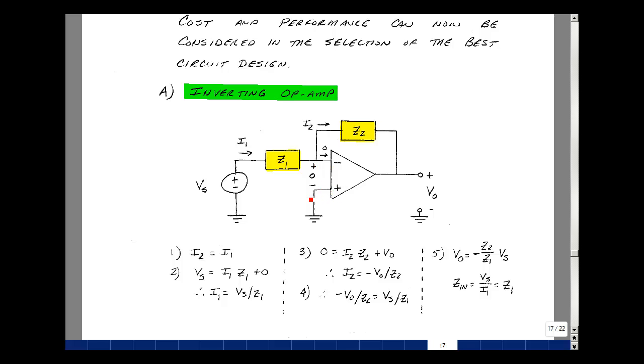There's no current entering or leaving here because there's a very high resistance between these terminals. Let's solve for Vout in terms of Vs and then create a model for the circuit. The unknowns here are Vout and I1 and I2. I do know that I1 equals I2 because there's no current flowing into the op-amp. If I go around this loop, the rise in voltage is Vs. The drop is going to be equal to I1 times Z1 plus the drop of zero. That could solve for the current I1. It would be equal to Vs divided by Z1.